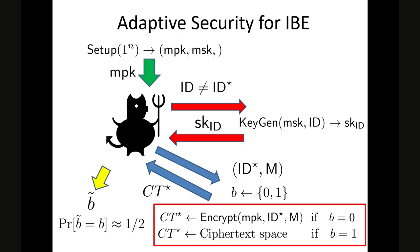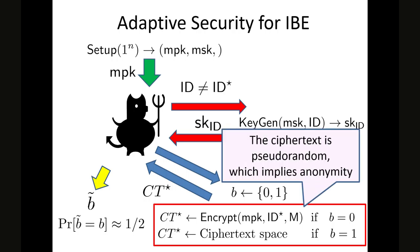Next, I explain the security model for IBE in our work. We say that an IBE scheme is Adaptively Secure if the challenge ciphertext — which is an encryption of some message under some challenge identity chosen by the adversary — is pseudorandom, even if the adversary can make key extraction queries for any identities. Adaptive security means the adversary can choose the target challenge identity depending on the master public key and secret keys. Because we require that the challenge ciphertext is pseudorandom, this security definition implies anonymity.